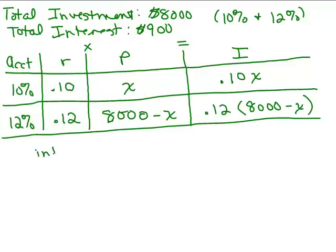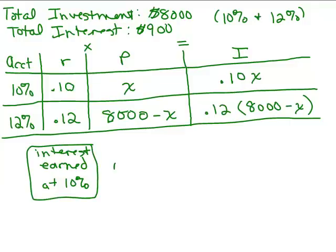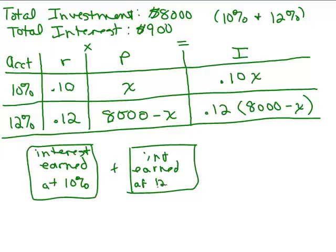So, in other words, I could say the interest earned in the 10 percent account, however much interest I earn there, plus the interest earned at the 12 percent account, that should add up to $900. That's what I'm saying here. Are we okay with that? Well, what is that exactly? What was that interest earned at 10 percent? Let's fill out what that really is. That was the .10x.